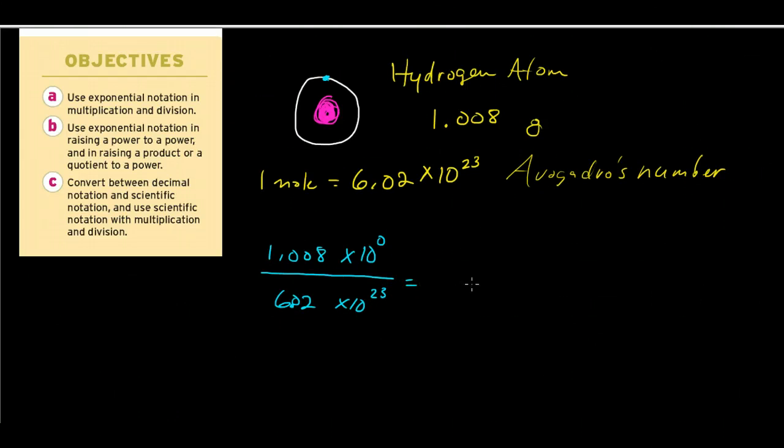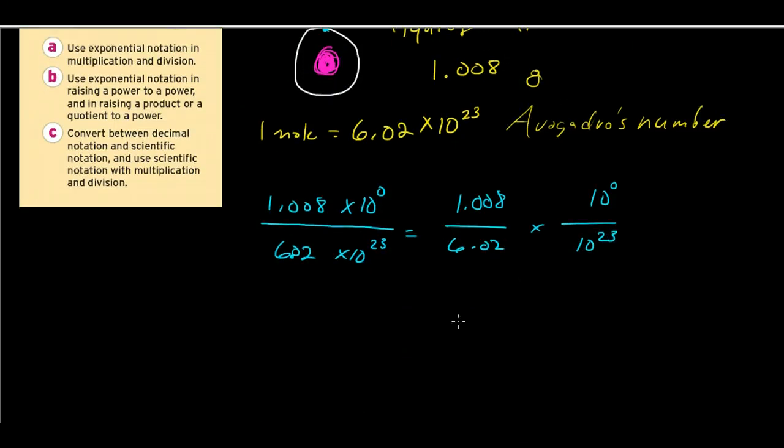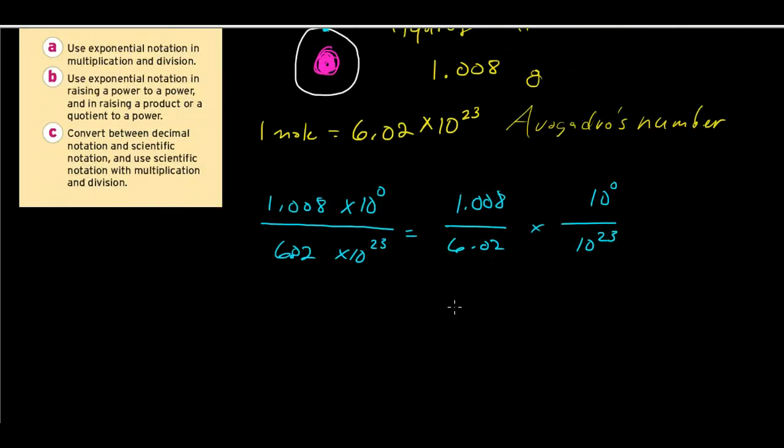And so, in order to calculate that, we'll do 1.008 divided by 6.02, and we'll multiply that by 10 to the 0 power, divided by 10 to the 23rd power. What we'll get is somewhere, and this is an approximation again, this will be about 0.167.